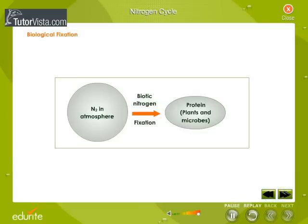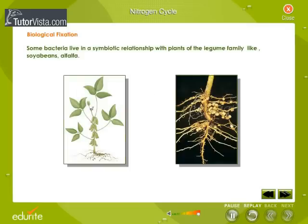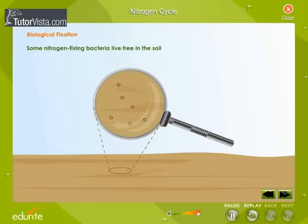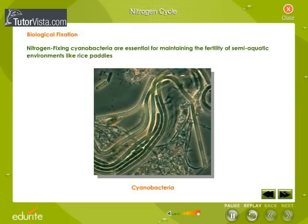Biological fixation: the ability to fix nitrogen is found only in certain bacteria. Some live in a symbiotic relationship with plants of the legume family, such as soybeans and alfalfa. Some establish symbiotic relationships with plants other than legumes, such as alders. Some nitrogen-fixing bacteria live free in the soil. Nitrogen-fixing cyanobacteria are essential for maintaining the fertility of semi-aquatic environments like rice paddies. Biological nitrogen fixation requires a complex set of enzymes and a huge expenditure of ATP, and although the first stable product of the process is ammonia, this is quickly incorporated into protein and other organic nitrogen compounds.